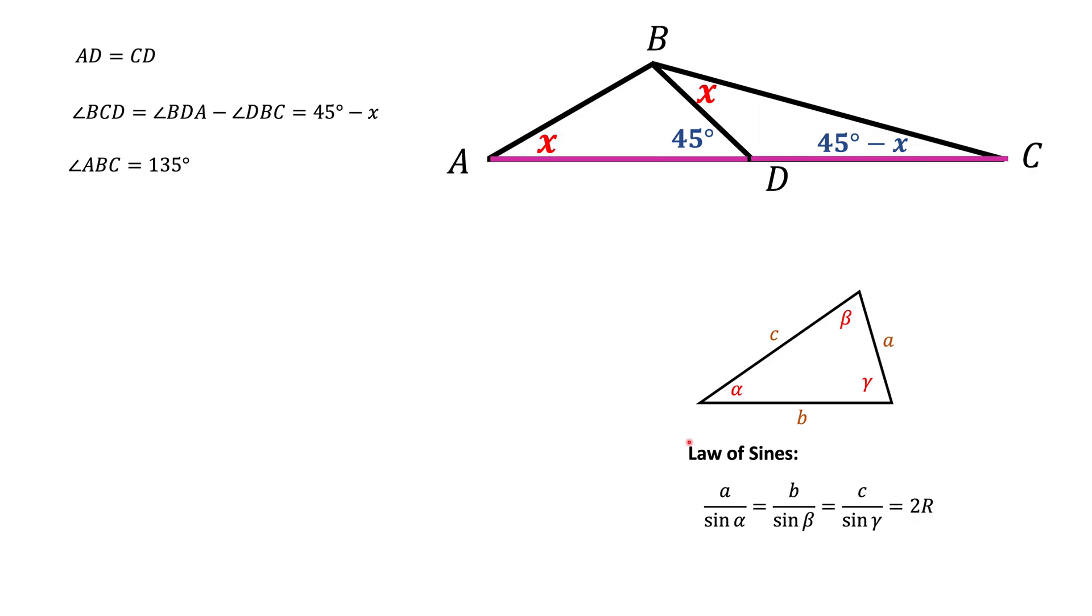So let's apply law of sines. First of all we're going to apply it to the big triangle ABC. What we find is that side AC divided by the sine of the opposite angle which is 135 degrees should be equal to the side BC divided by the sine of the opposite angle X.